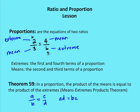The means and extremes are two terms you'll need to know for the next two theorems. The first is the means extremes product theorem. It states that in a proportion, the product of the means — B times C — is equal to the product of the extremes — A times D. This is essentially your cross multiplication theorem: A times D equals B times C. In a two-column proof, you can abbreviate this as MEPT.